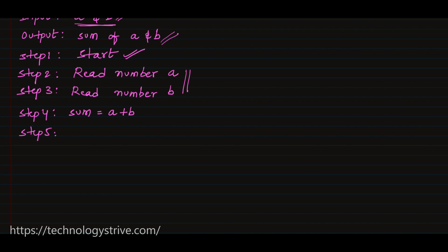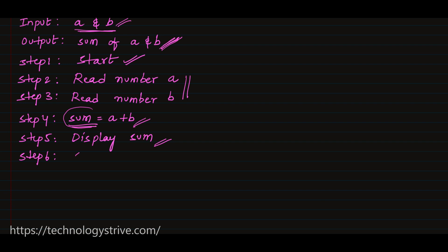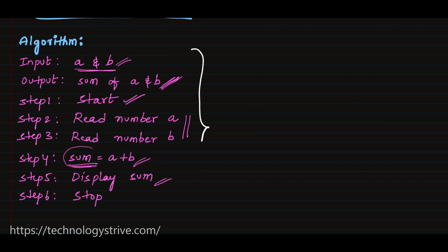Step five: we found the result produced by adding the two numbers a and b, which is the desired result, so we display sum. This completes all the steps, so at the end we stop the algorithm. These are the list of steps to achieve the sum of two numbers a and b.